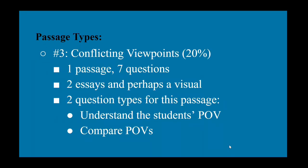The third type, which makes up 20% of your score, is conflicting viewpoints, which is one passage with seven questions. And so this section or this type may have two essays or more, and maybe even a visual. And there are two types for this passage. So one is understanding the student's point of view. They'll give you a student and their explanation of why a certain scientific phenomena happens. And you have to be able to understand that student's reasoning, and then determine whether parts of their actual thought process are correct or incorrect, as well as how that applies to the real world.